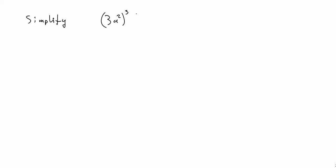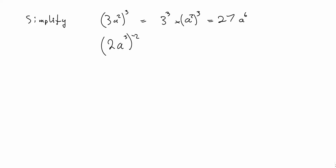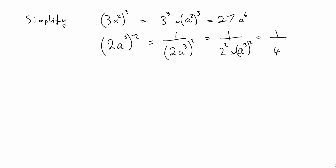Simplify 3a squared, all cubed. We have to cube both parts: that would be 3 cubed times a squared cubed. 3 cubed is 27, and a squared cubed means we multiply 2 by 3, giving 27a to the power of 6. For 2a cubed to the minus 2: the negative index makes it a reciprocal, so that is 1 over 2a cubed squared, which is 1 over 2 squared times a cubed squared, giving 1 over 4a to the 6.